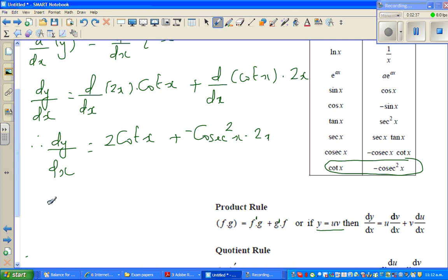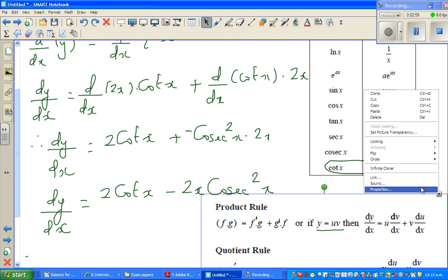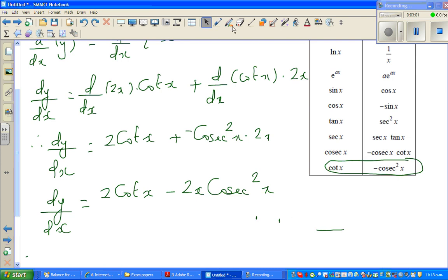So let me write the answer. So dy by dx, I want to show you again in this video, how to check your answer. This is 2 cot x minus 2x times cosec squared x. So let me delete this now. I don't need this. So I need more space now.